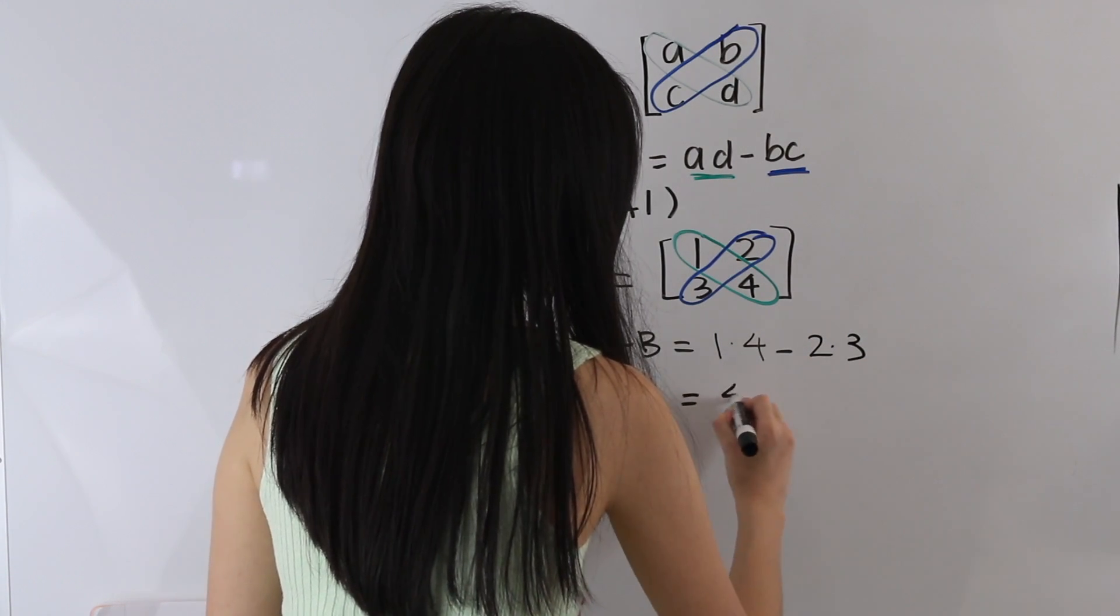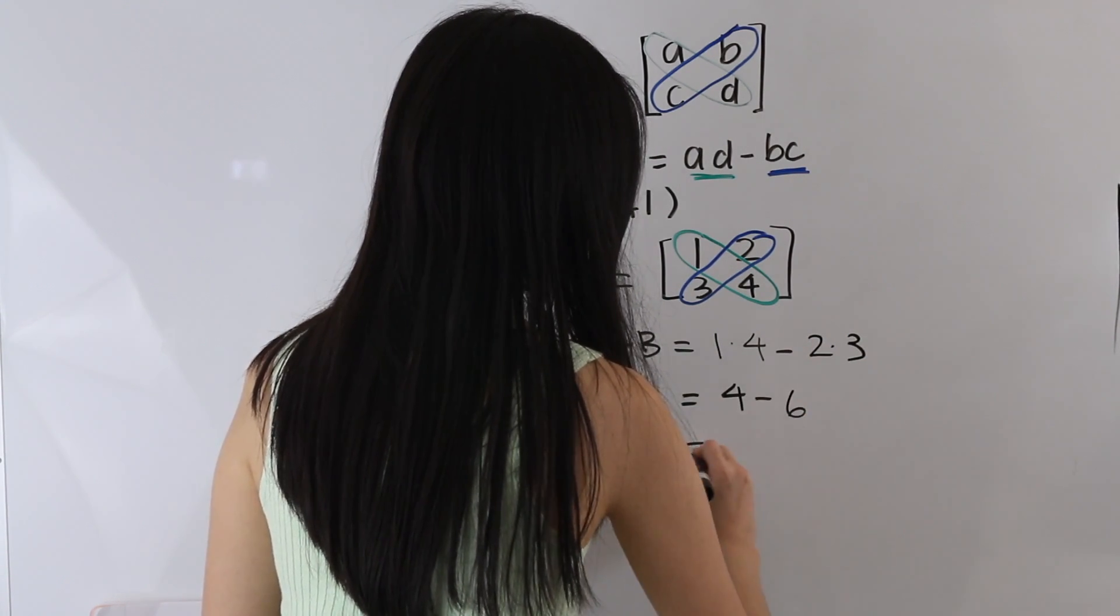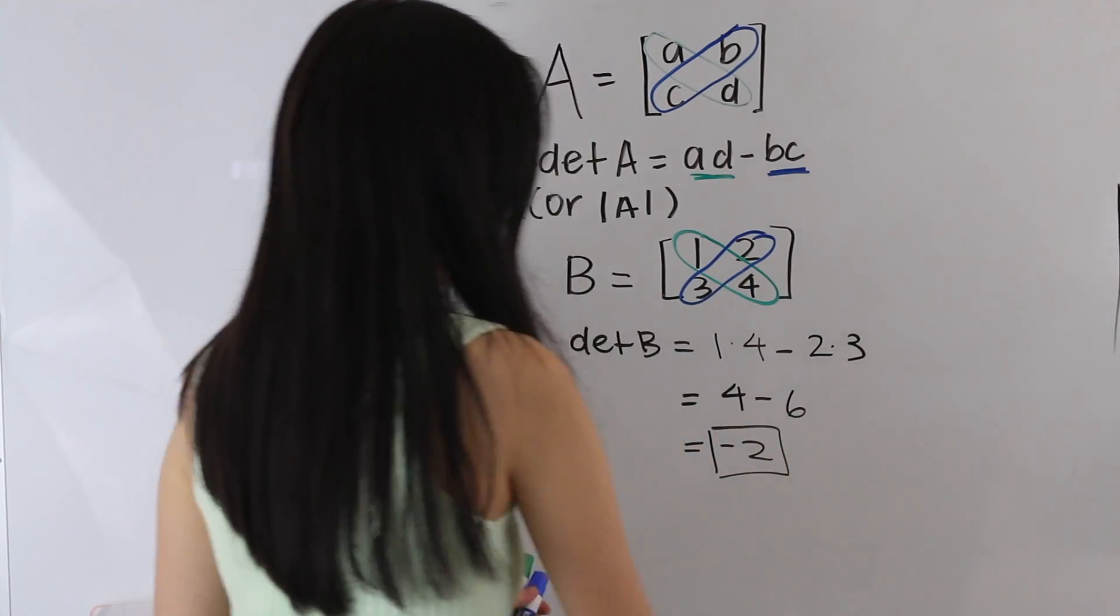And simplifying this, we get 4 minus 6, which is just equal to negative 2. And that is our final answer.